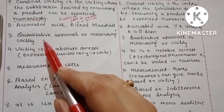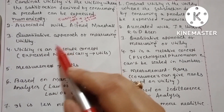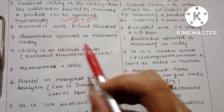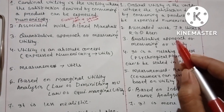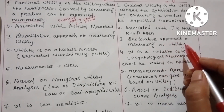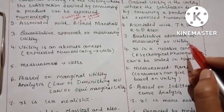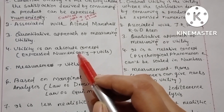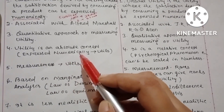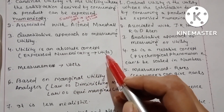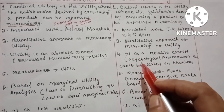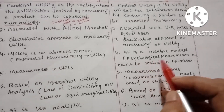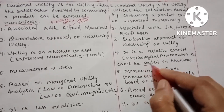Cardinal utility analysis is a quantitative approach of measuring utility, as we express it numerically. Ordinal utility analysis is a qualitative approach of measuring utility. Further, utility in the cardinal sense is an absolute concept expressed numerically in terms of utils, whereas ordinal utility is a relative concept — a psychological phenomenon that can't be scaled in numbers.